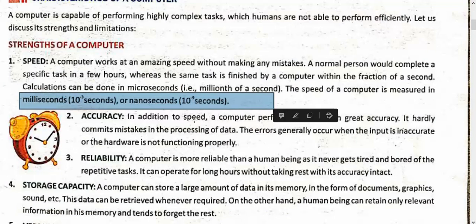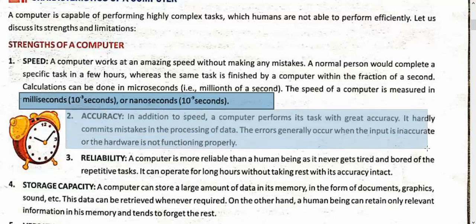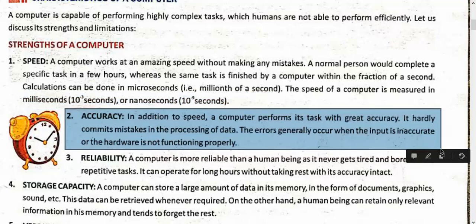Next is accuracy. A person can make mistakes, but a computer cannot — it works with the greatest accuracy. No matter how problematic the work is, if there are issues, it means the data is wrong or instructions are wrong. Otherwise the computer is right, so there cannot be any possibility of doing things wrong.